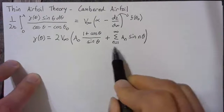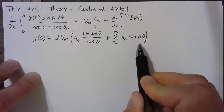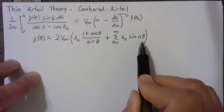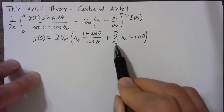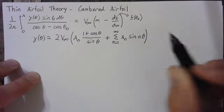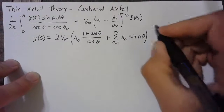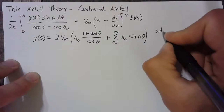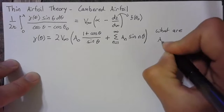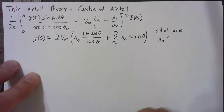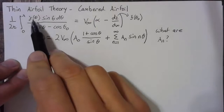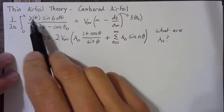You may recognize this as a Fourier series. The idea here is that we can represent any curve — any function of θ — as an infinite sum of sine terms. The question now is: what exactly are our aₙ terms? To answer that, we're going to plug this γ back into our thin airfoil equation.